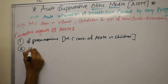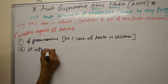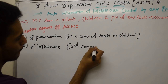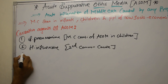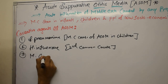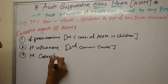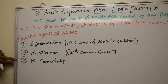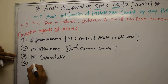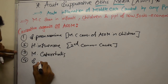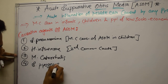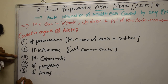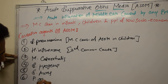Second, Haemophilus influenzae, which is the second most common cause of ASOM. Third, Moraxella catarrhalis. Other bacteria also responsible for ASOM include Streptococcus pyogenes, and sometimes Staphylococcus, and also Pseudomonas aeruginosa.